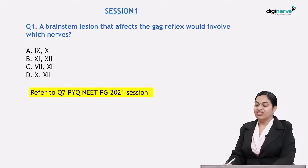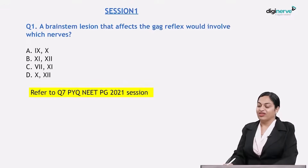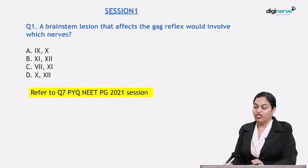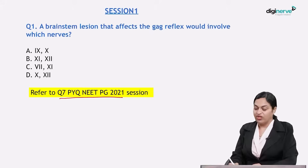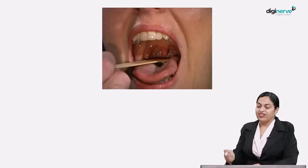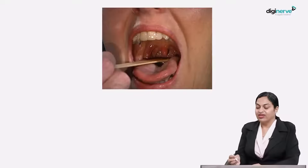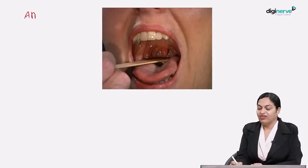A brain stem lesion that affects the gag reflex would involve which nerve? We have discussed this in detail in the NEAT PG 2021 session, question number 7, but let's recollect the afferent and efferent of the gag reflex.